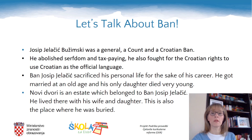Are your answers similar to these? Josip Jelačić was a general, a count, and a Croatian ban who abolished serfdom and tax payment. He also fought for the right to use Croatian as the official language. While his professional life flourished, he didn't have much time for his private life. He got married quite late, and had one daughter who died very young. Ban Josip Jelačić lived in Novi Dvori together with his family, which is also the place where his family tomb is.